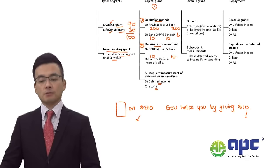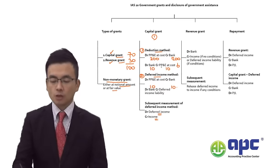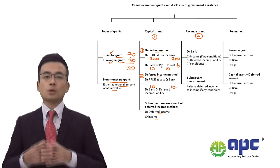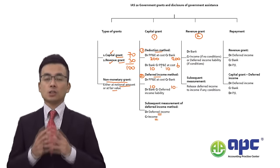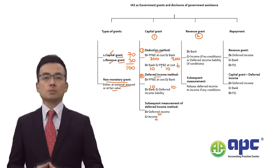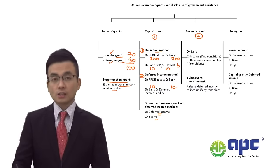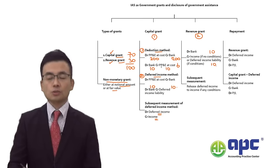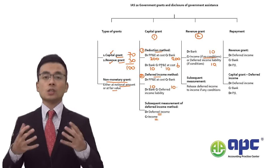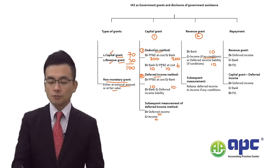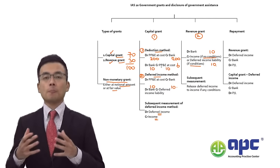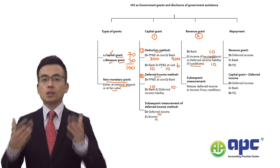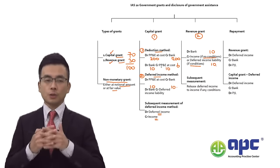That is the deferred income method. For the second type — the revenue grant — you receive money from the government reimbursing expenditures such as marketing, R&D, and salary costs. If there are no conditions, you debit bank and credit income directly. However, if conditions exist — for example, you must repay the $10 if you don't fulfill specific criteria — the treatment differs.